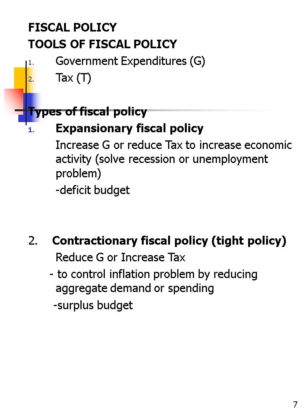Contractionary fiscal policy is a tight policy used when inflation occurs. To control the inflation problem, we have to reduce aggregate demand. Aggregate demand, as you may remember, is C plus I plus G plus X minus M. So what we do is implement a surplus budget — reduce G or increase T.